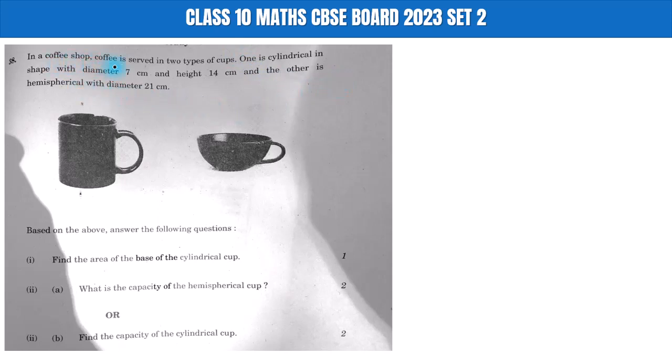Question: In a coffee shop, coffee is served in two types of cups. One is cylindrical in shape with diameter 7 cm and height 14 cm, and the other is hemispherical with diameter 21 cm. Based on the above, answer the following questions.